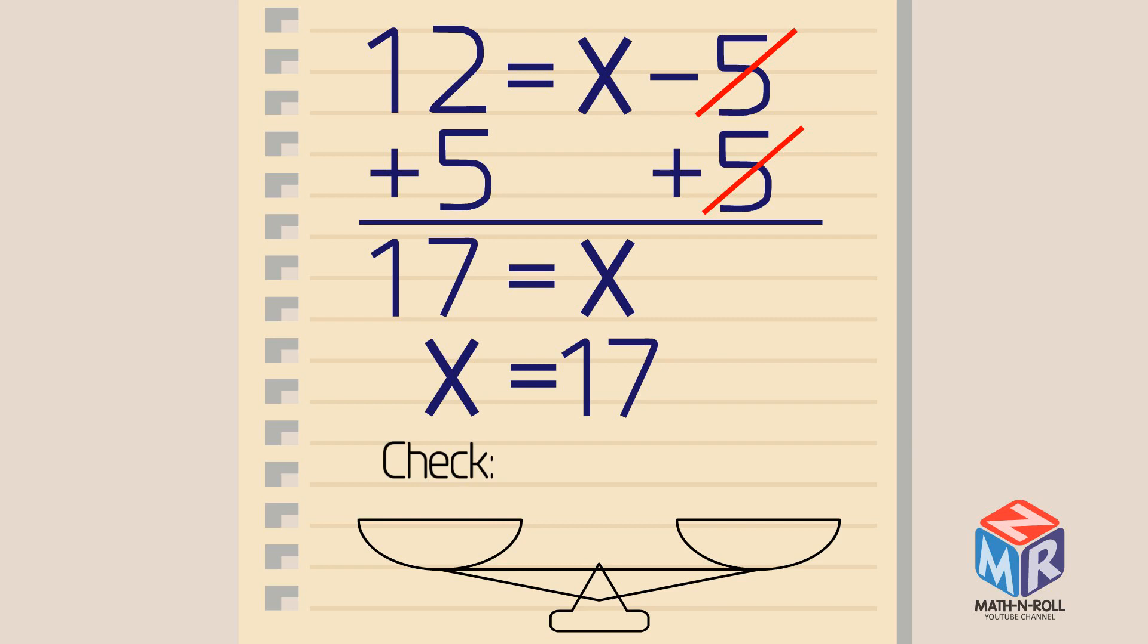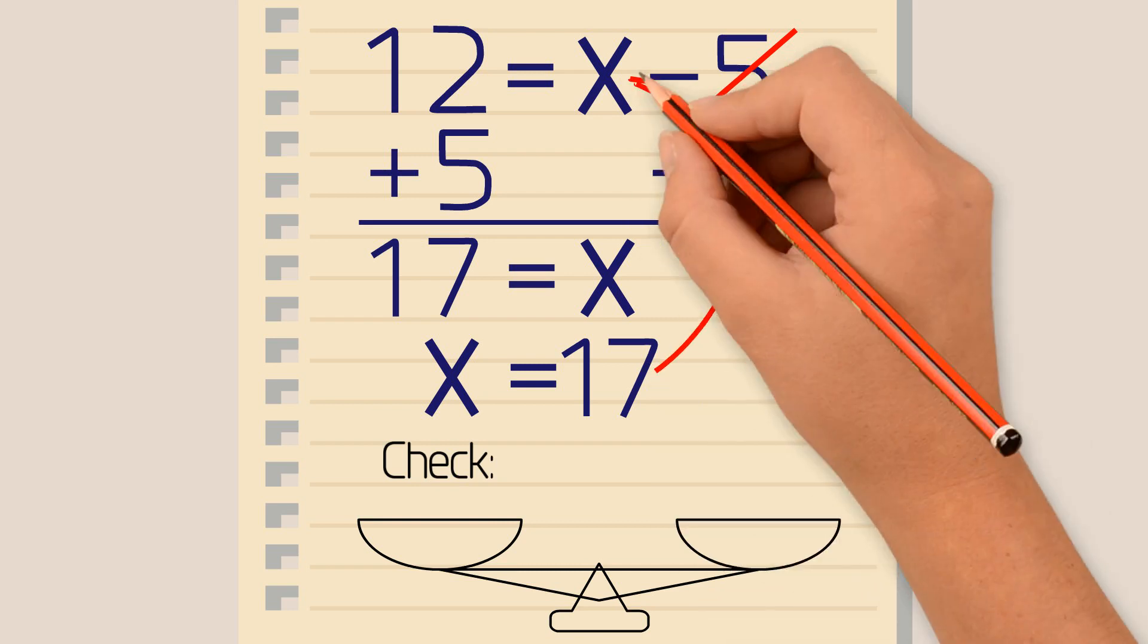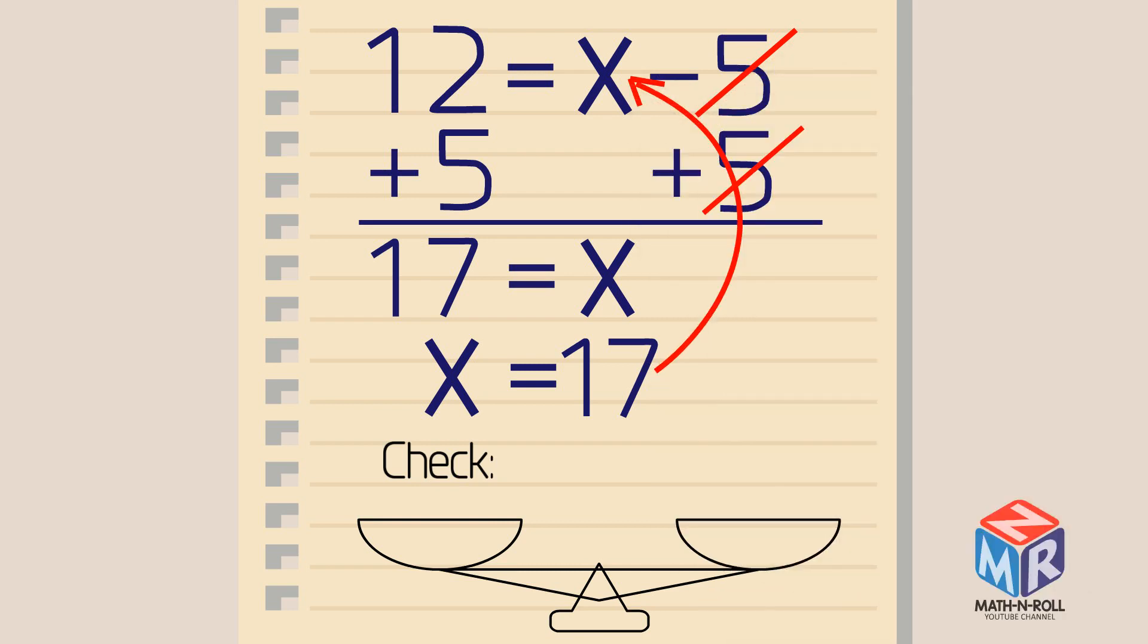Let's check it. Plug in our x value of 17 into the original equation. 12 equals 17 minus 5. Our answer is correct.